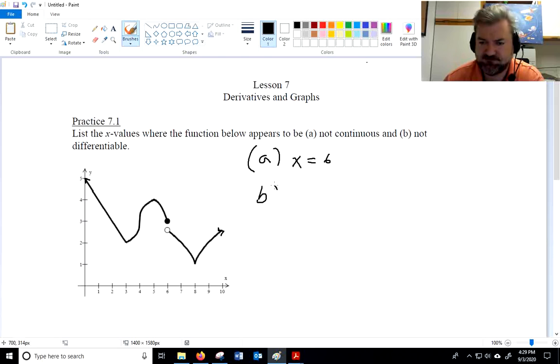Okay, so let's go to b. Well, where is it not differentiable? Well, at x equals 6 because it's not continuous. But also at x equals 3 because there is a cusp there. Now, it's a little difficult to see, but I think also at x equals 5 because at x equals 5, that's a very sharp point there. That is not a smooth transition.